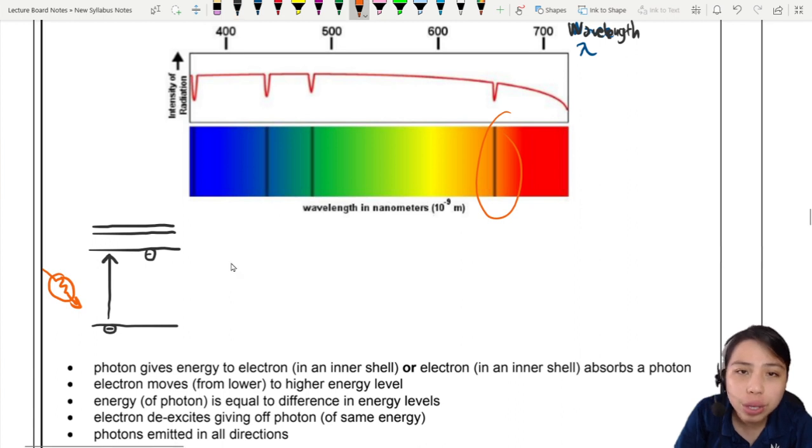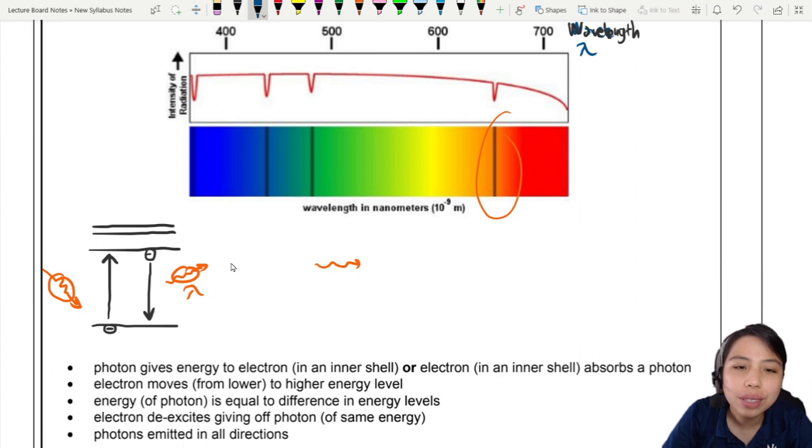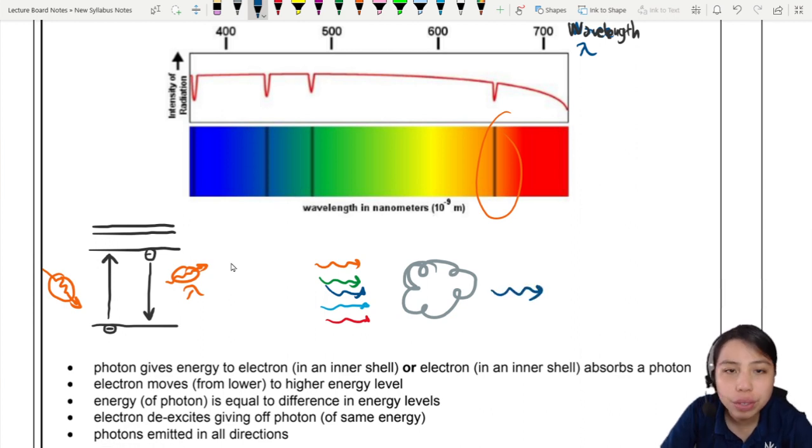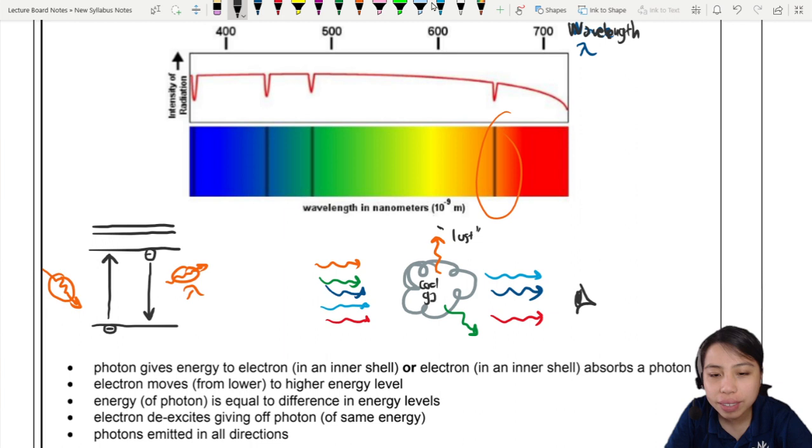But it can't stay up there for long. Eventually you have to de-excite. When the electron de-excites and goes down to lower energy level, it will release that exact same wavelength but thrown in whatever random direction. So imagine there's many photons going through a cloud of cool gas. Only some make it through straight. The others are absorbed and thrown somewhere else in whatever direction.